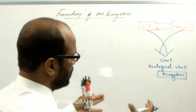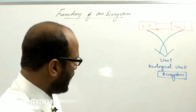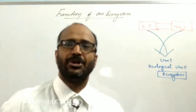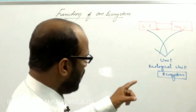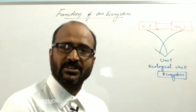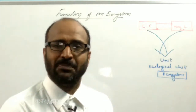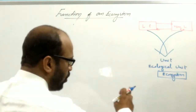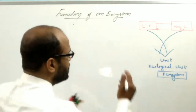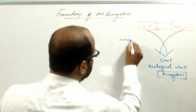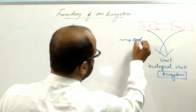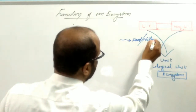In the ecosystem, there are several members from the producers to decomposers. All these members are interconnected and interdependent only because of food energy. All the members of the ecosystem are interlinked and interdependent because of the dependency of food energy, or food, also known as nutrient.